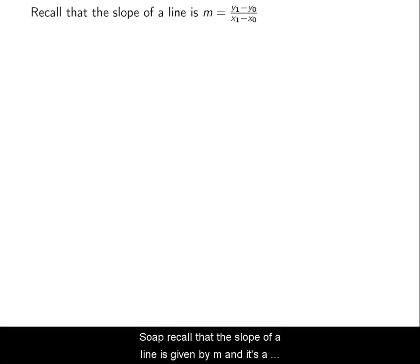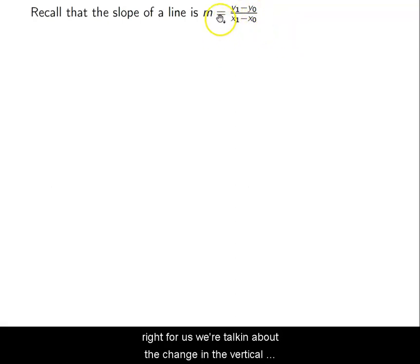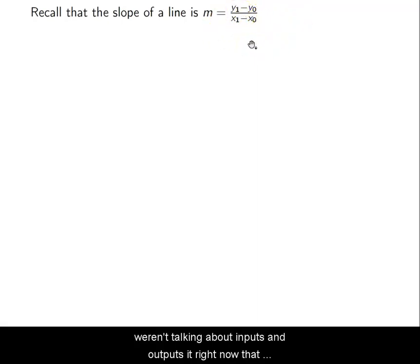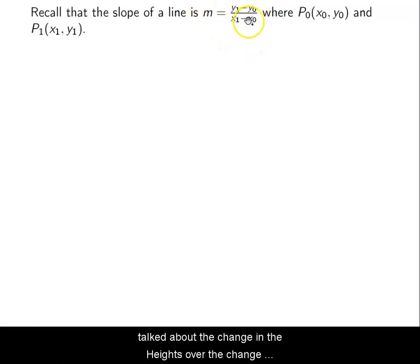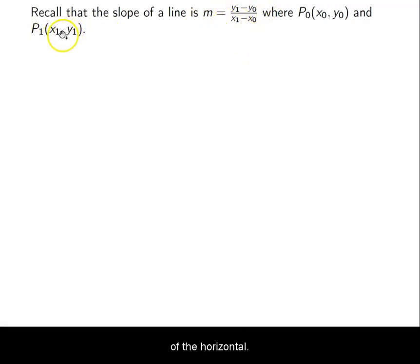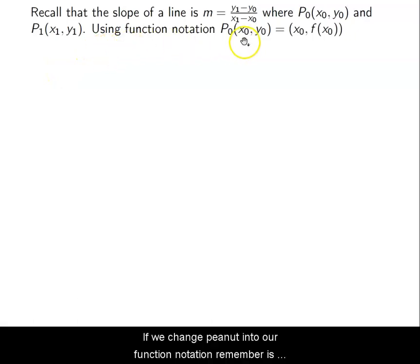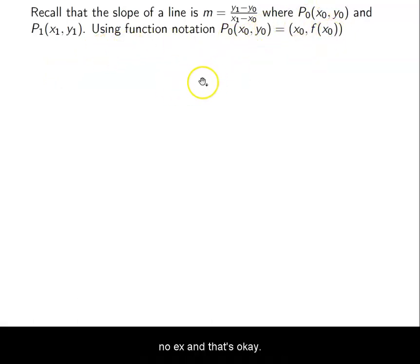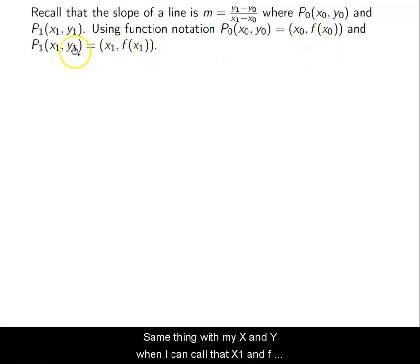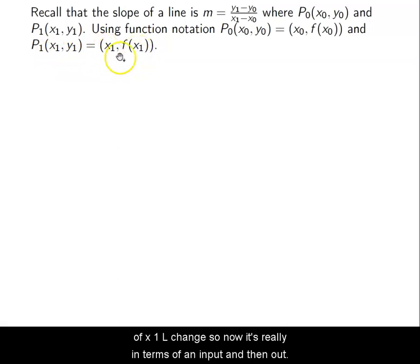Recall that the slope of a line is given by m, and it's the difference in the outputs over the difference in the inputs. We're talking about the change in the vertical over the change in the horizontal. Now that we have functions, we can talk about that in the sense of input and output. So for slope, when we talk about slope, the change in heights over the change of the horizontal was given because we had points p0 and p1. If we change p0 into function notation, it's now x and f of x — an input of x0 and an output of f of x0. Same thing with x1, y1: I can call that x1 and f of x1. So now it's really in terms of an input and an output.